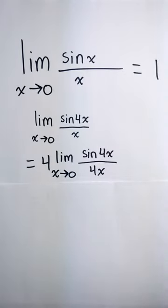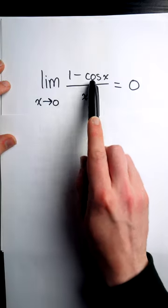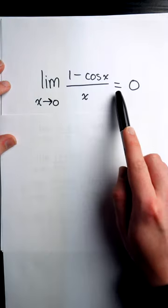X is approaching 0, but that's the same as 4x approaching 0. And so this is equal to 4 times this limit, which is 1. The limit of 1 minus cosine x over x as x approaches 0 is 0.